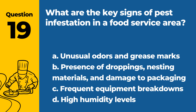Question 19. What are the key signs of pest infestation in a food service area? A. Unusual odors and grease marks. B. Presence of droppings, nesting materials, and damage to packaging. C. Frequent equipment breakdowns. D. High humidity levels. Answer: B. Presence of droppings, nesting materials, and damage to packaging. Key signs of pest infestation include the presence of droppings, nesting materials, and damage to food packaging.